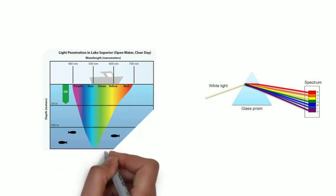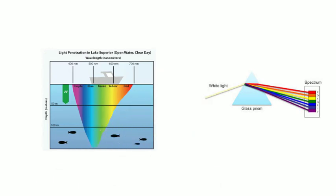At 30 to 50 meters, the orange color is absorbed. At 50 to 100 meters, the yellow color is absorbed. At 100 to 200 meters, the green color is absorbed. Beyond 200 meters, the blue color is absorbed.